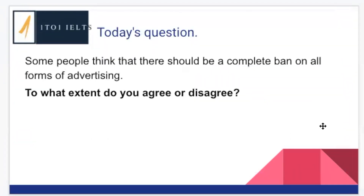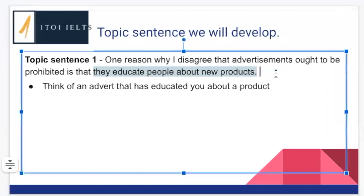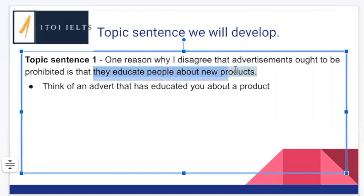So the question that we started a few weeks ago was: 'Some people think that there should be a complete ban on all forms of advertising. To what extent do you agree or disagree?' The first topic sentence that we need to support — because we've got a very nice full-part structure for our topic sentences, it's very easy to find out what our main idea is. The main idea is the final part: 'One reason I disagree that advertisements ought to be prohibited is that they educate people about new products.'